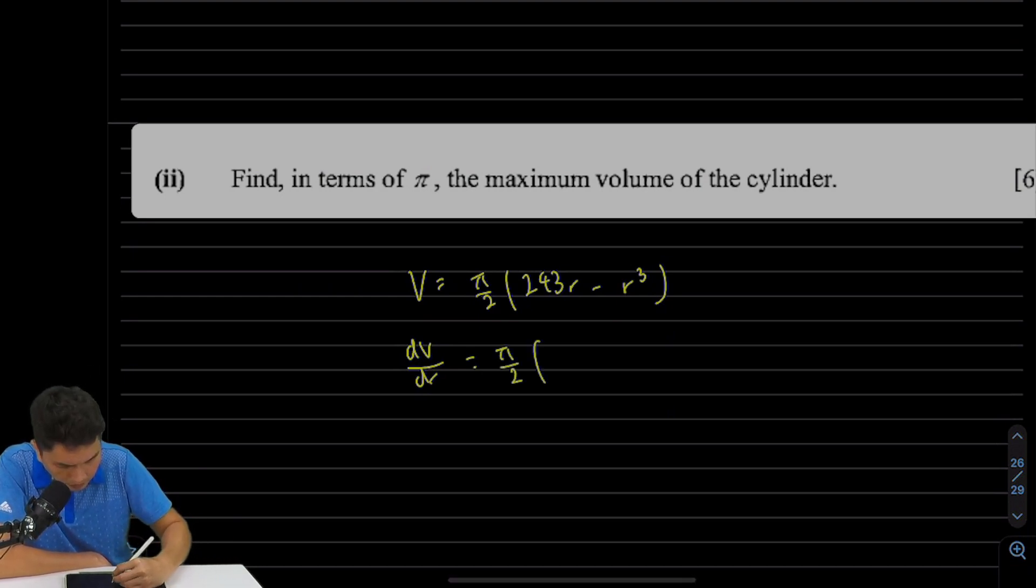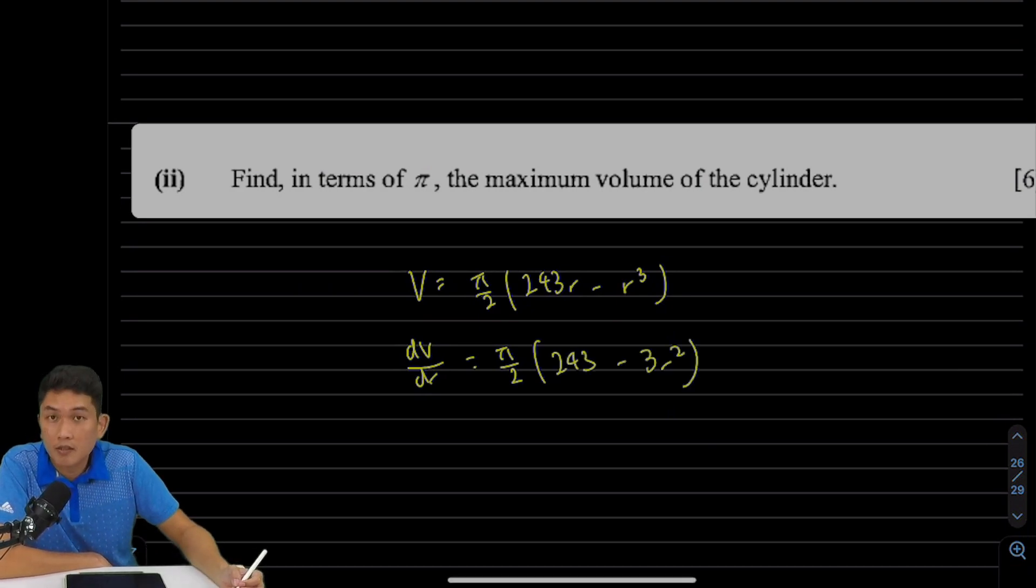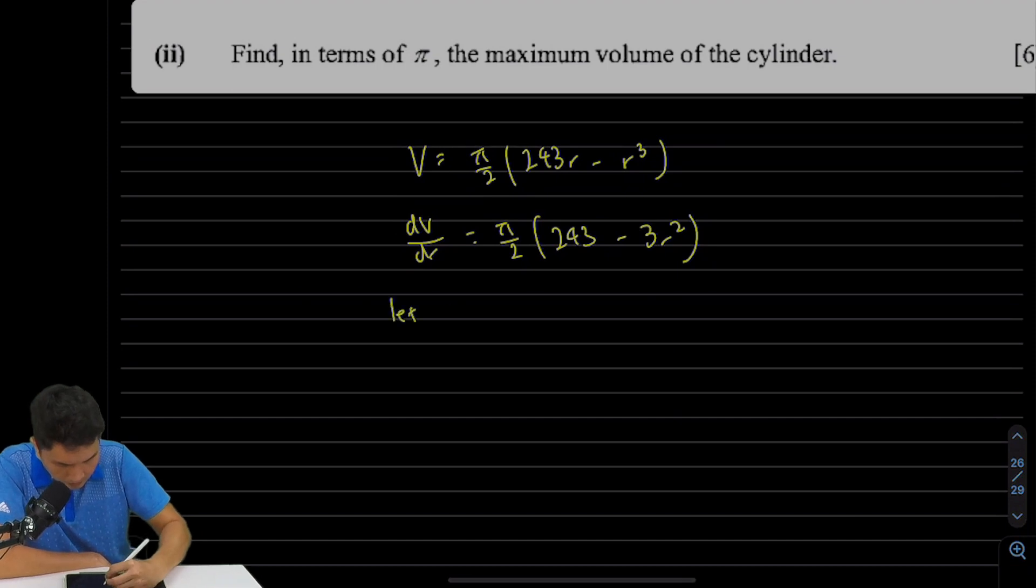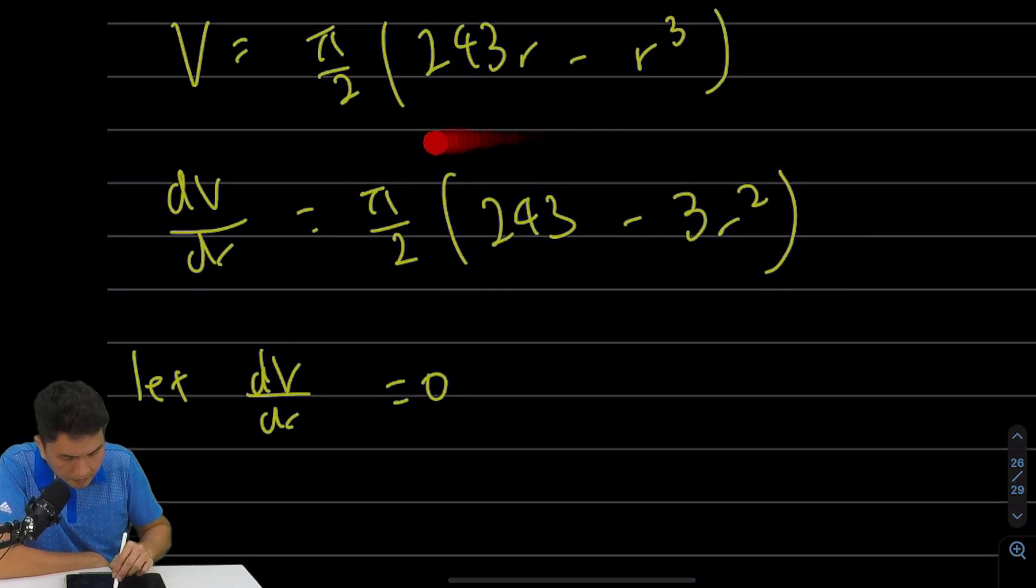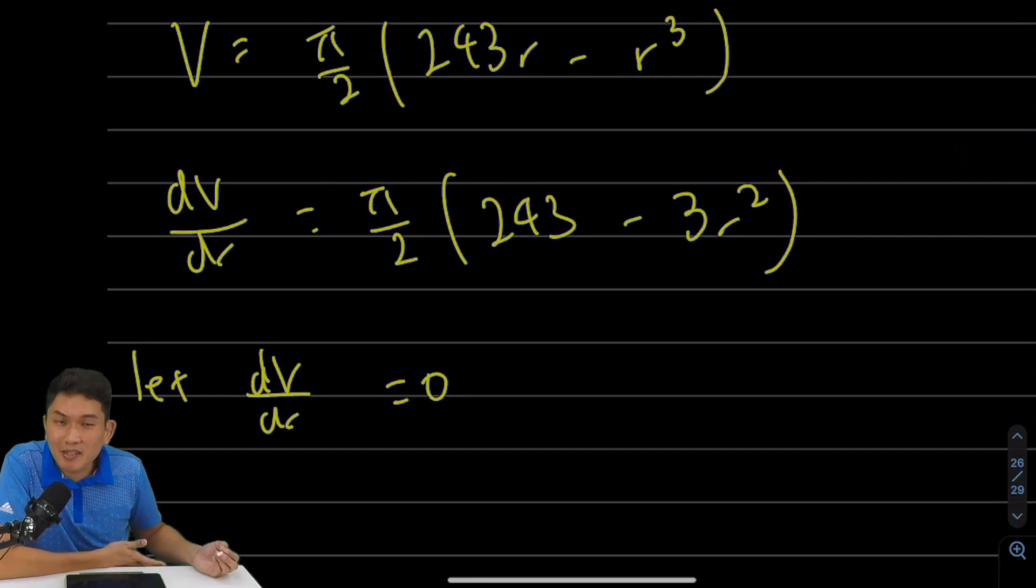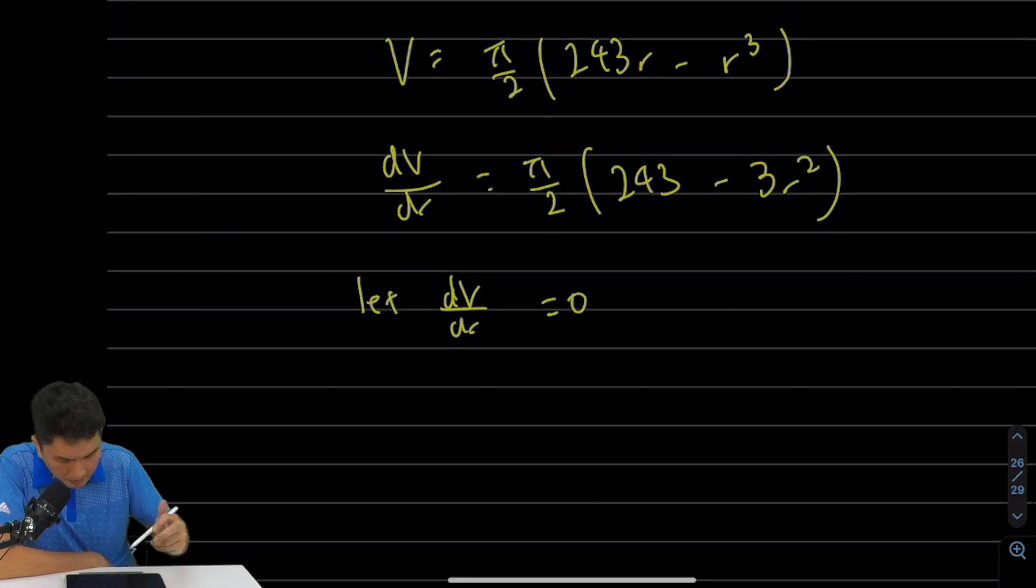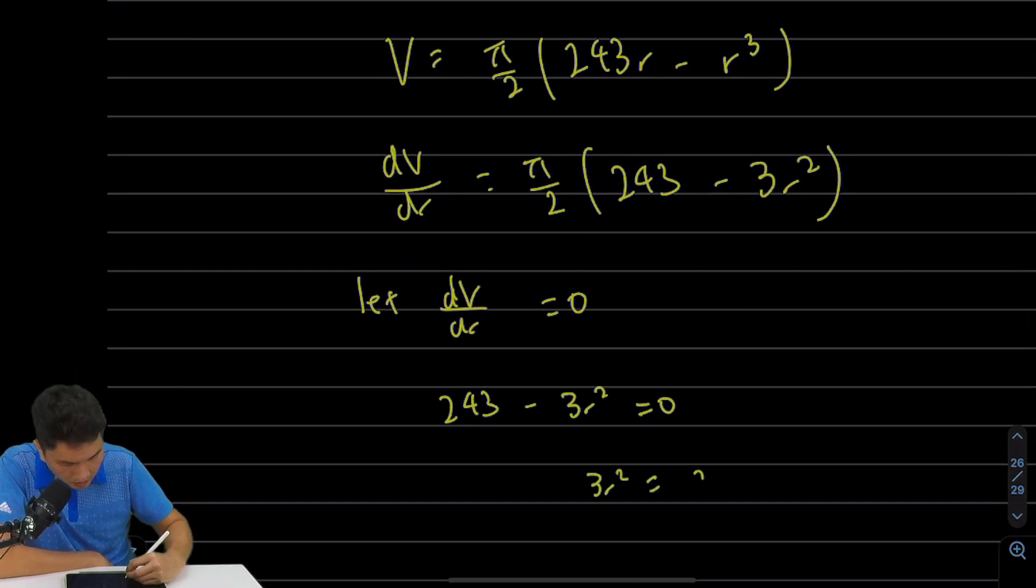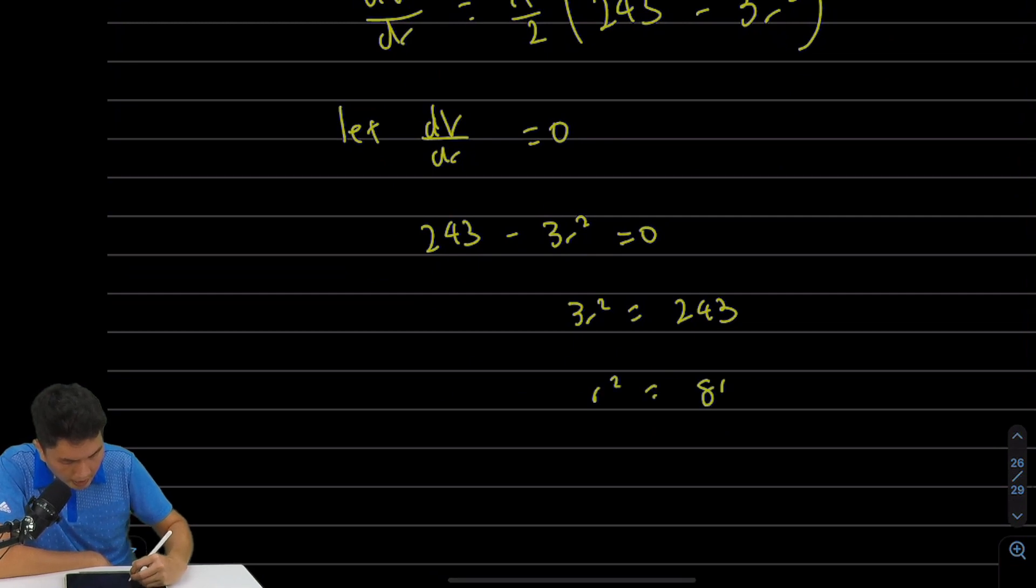So dV/dr is π/2 times (243 - 3r²). To find the maximum or minimum volume, we let dV/dr be 0. If I let it be 0, it means that this thing is 0. Now if this thing is 0, I know it's a multiplication of π/2 and this bracket. If it's a multiplication, either this is 0 or this is 0, correct? But I know that π/2 is not 0. It's just a fixed number. So this must be 0. So when we let dV/dr = 0, it means that 243 - 3r² = 0. That means 3r² = 243, r² = 81, r equals 9 or negative 9.